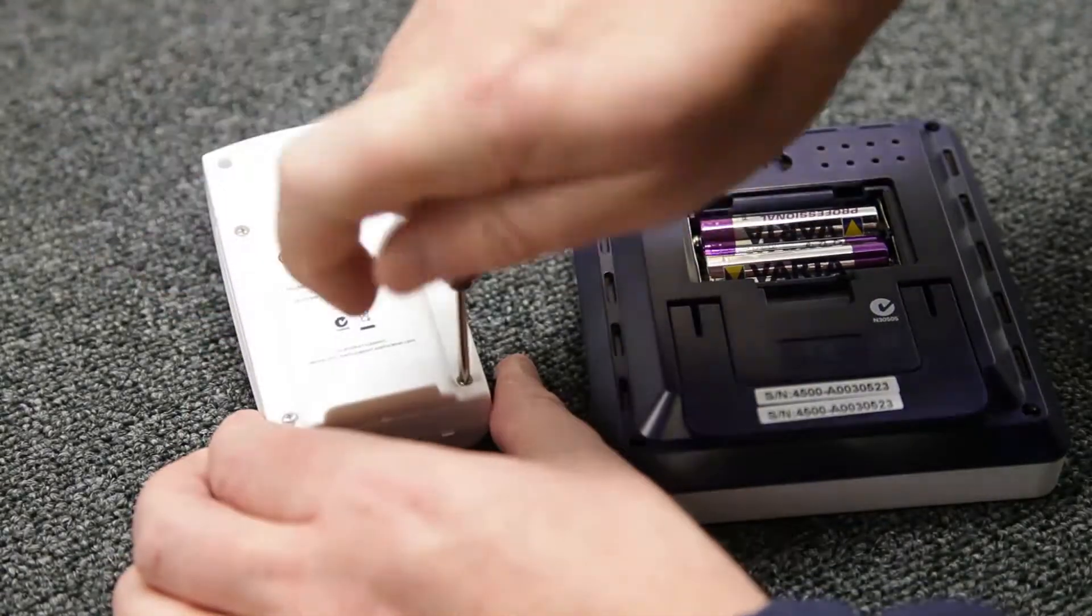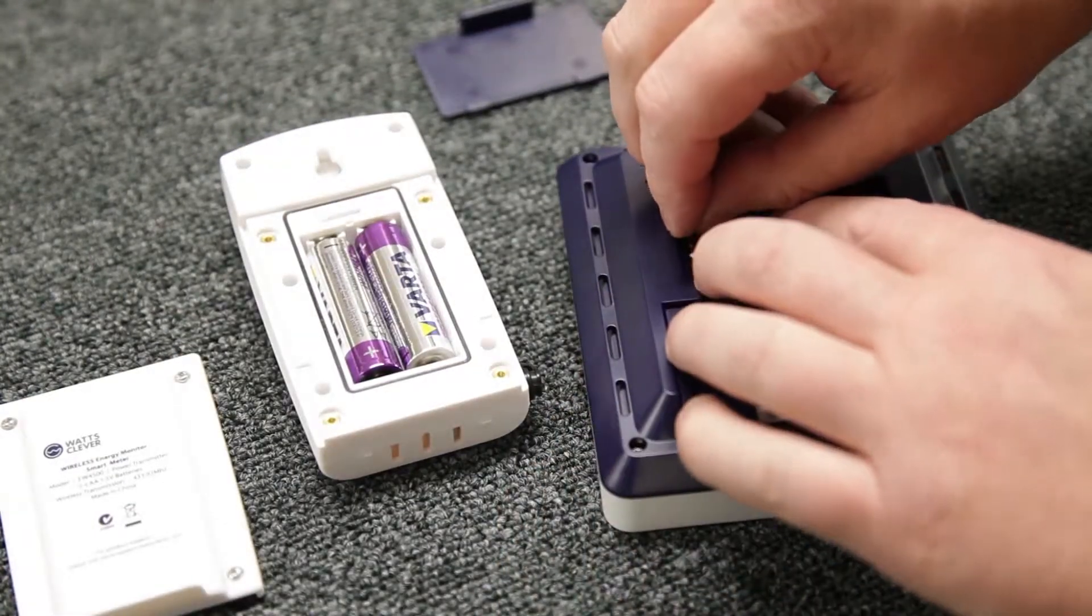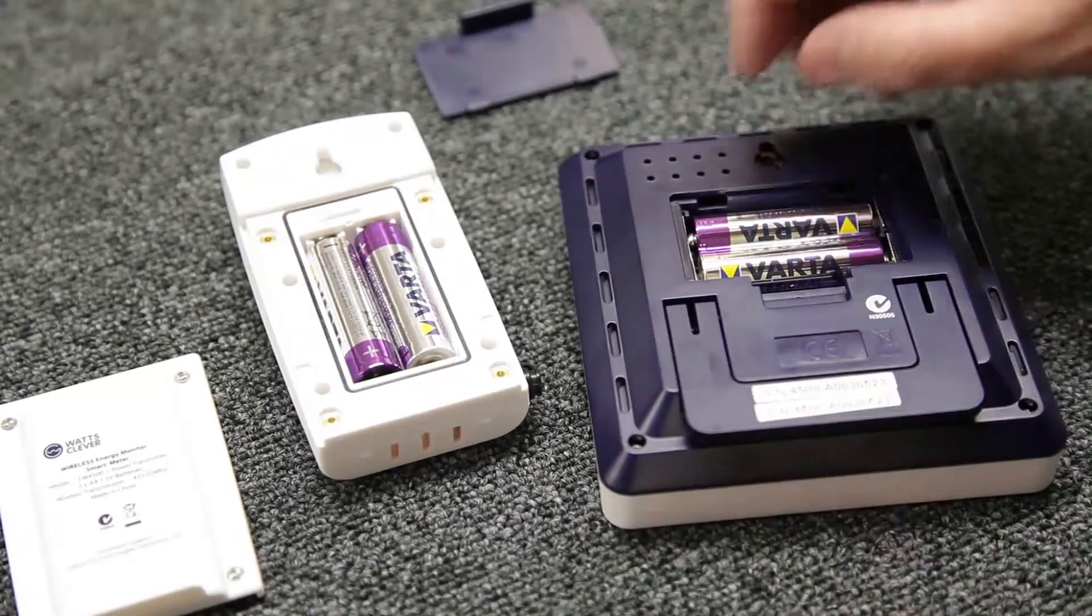To begin we need to remove the plastic tags from between the batteries to power both the transmitter and the receiver units.